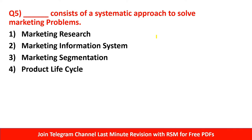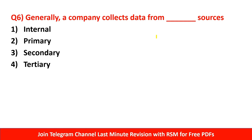Question 5: Which consists of a systematic approach to solve marketing problems? Options are marketing research, marketing information system, market segmentation, or product life cycle. Whatever problems arise in the part of marketing, we use a system called marketing research. Through marketing research, we collect market-related information, store it in our database, and use it when marketing-related problems arise. So the right answer is marketing research.